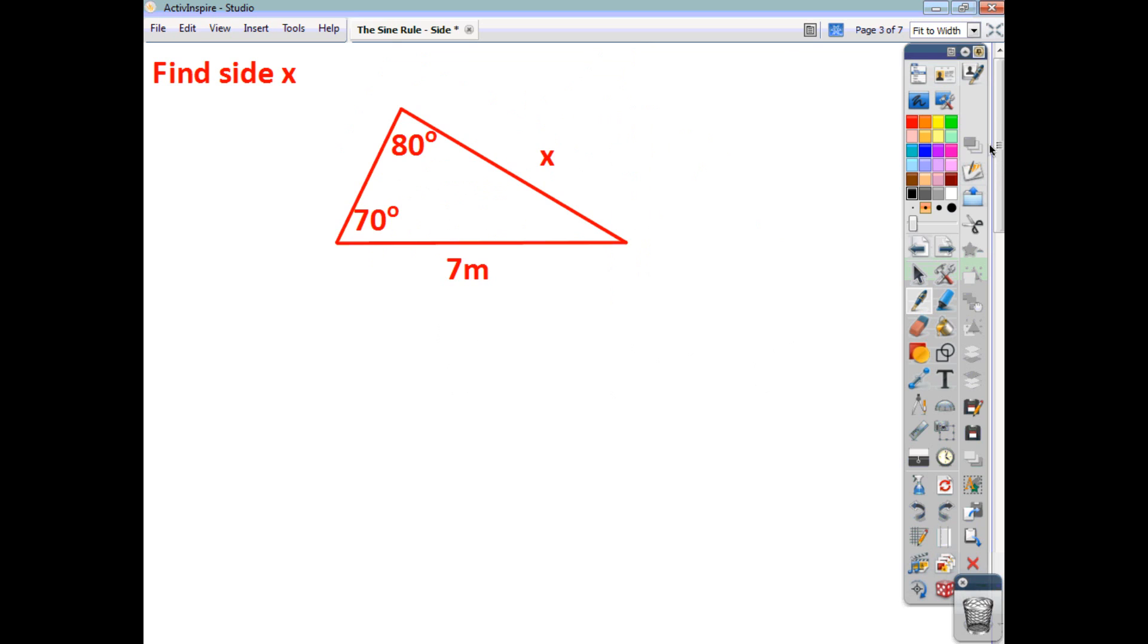Now, let's have a look at a couple of examples. So first of all, we see here that we have a pair of opposites, an angle and its opposite side, and also we have another pair of opposites. So we just start off by substituting in the various different values we're given. So x over sine 70, that's going to be the same as 7 over sine 80.